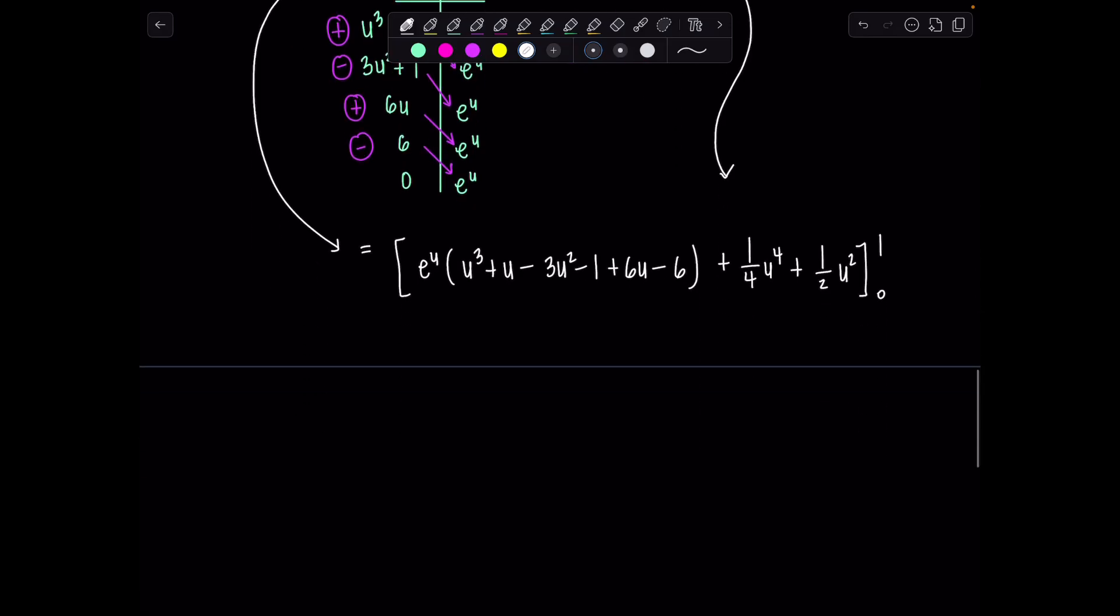Before we start evaluating it, let's just clean up in here a wee bit, shall we? This is going to be u³ - 3u² plus 7u - 7.